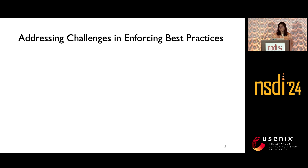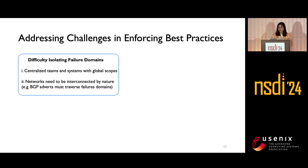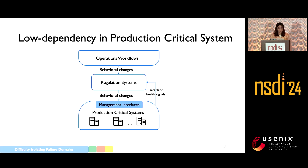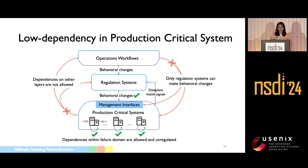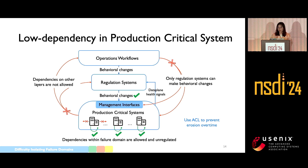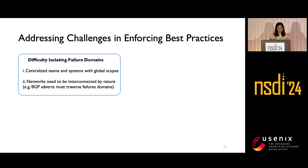KAPPA enforces low dependencies in the production-critical system: only the regulation system can make behavior changes to it, and only through defined management interfaces, with no dependencies on other layers allowed. Within the production-critical system, dependencies are only allowed within failure domains, not across them. KAPPA also enforces intended configuration ownership (ICO) to prevent erosions over time caused by accidental changes by operators. These low dependencies and ICOs help to isolate failure domains and prevent erosions.